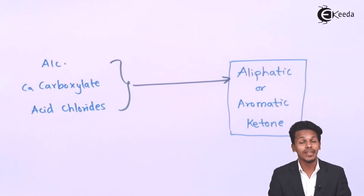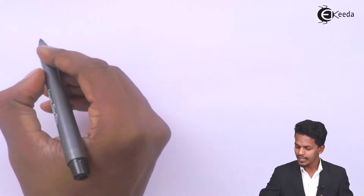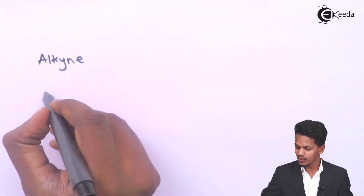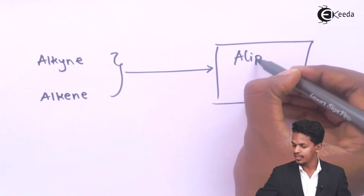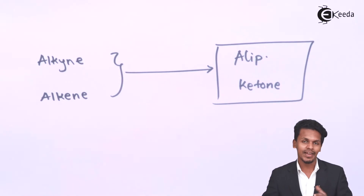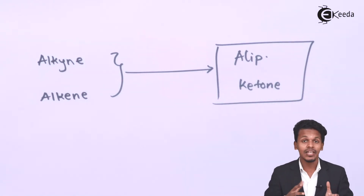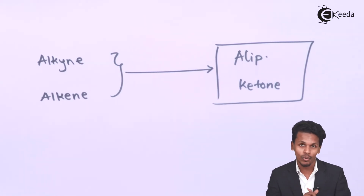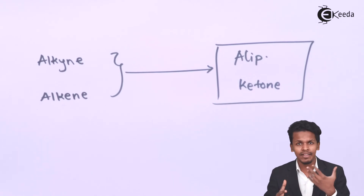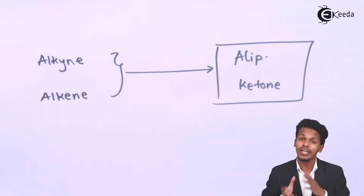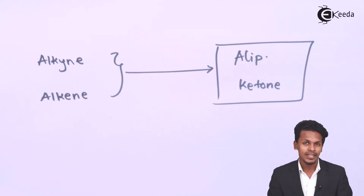If we want to prepare specifically aliphatic ketones, we can use alkynes or alkenes. By using these two, we can easily prepare aliphatic ketones. Reactions with alkenes or alkynes will only give an aliphatic ketone, whereas with alcohols and carboxylates the product — aliphatic or aromatic — depends on what kind of chemicals we use.